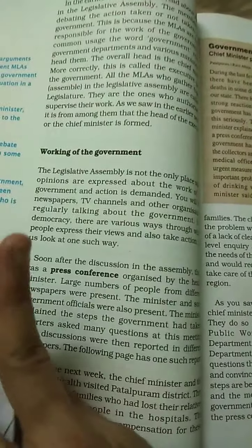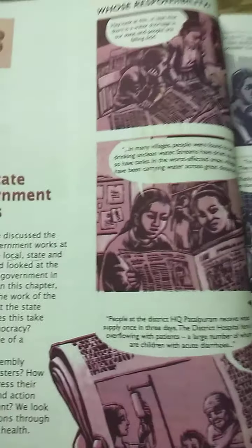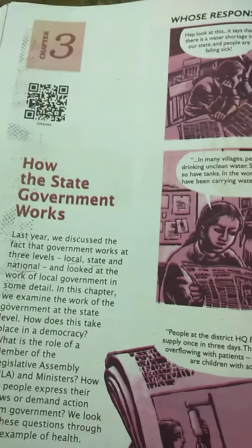Laws for the state are made by the State Legislative Assembly, while laws for the country are made by the Union Parliament. This lesson covered the MLA, ruling party, majority, and Chief Minister — this is how the state government works. Thank you, children.